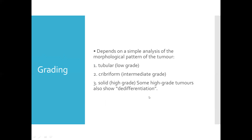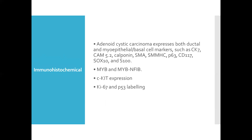Immunohistochemically, adenoid cystic carcinoma expresses both ductal and myoepithelial cell markers such as CK7, CAM5.2, calponin, SMA, SMMHC, 6B3, CD117, S-XCAN, and S100. The most commonly referenced markers are MYB and MYB-NFIB.